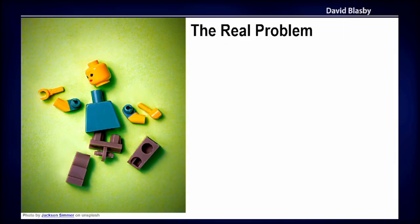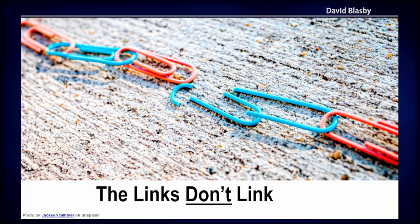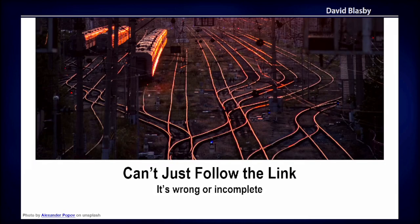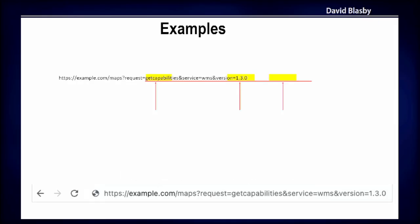The next problem is a real keystone issue and it was kind of unexpected: our links don't actually link — they're wrong or incomplete. You can't just go copying and pasting a URL from a service document into your browser expecting it to work. Here's a good example: a complete link — copy and paste this into a browser and it works fine. You'll get a capabilities document, no problems. You can see there are three parameters in this request: the request type GetCapabilities, the service WMS, and the version of the service.